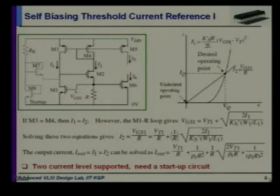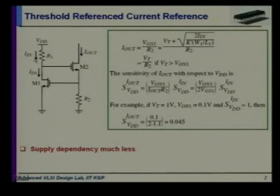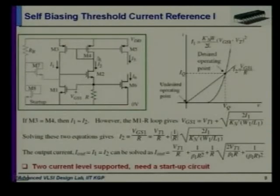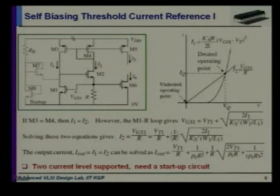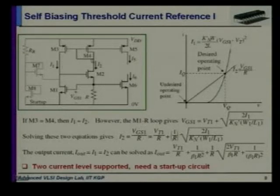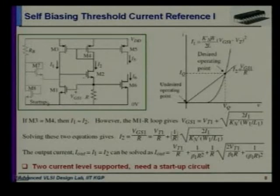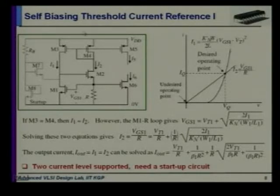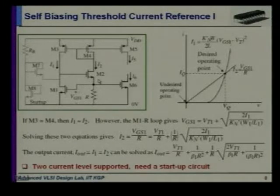Now, this is a self-biasing circuit — a self-biasing threshold reference. Instead of resistor R, a current mirror M3 and M4 is used. M3 and M4 bootstrap the current so that the branch current I1 equals I2. This portion is similar to the previous circuit but with the addition of this current mirror. Verifying the equations: I1 = I2 due to the M3–M4 current mirror, and VGS1 defines the current I2 through this resistor.